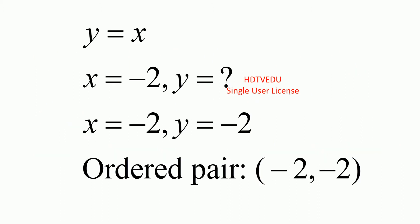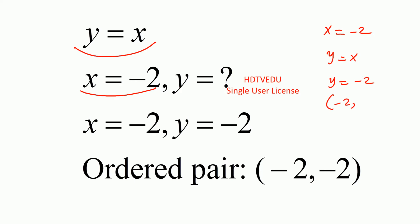y is equal to x, so the relationship between x and y is given by y is equal to x. We already have x equals negative 2. If x equals negative 2, then y is given by y is equal to x, so y equals negative 2. Our ordered pair becomes negative 2, negative 2. x comes first, so ordered pair is negative 2, negative 2.